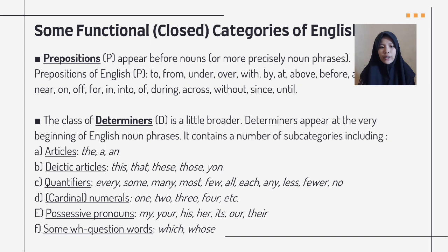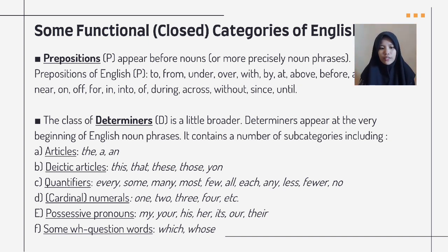The class of determiners (D) is a functional category. Determiners appear at the very beginning of English noun phrases and contain a number of subcategories, including: articles — 'the,' 'a,' 'an'; deictic articles — 'this,' 'that,' 'those'; quantifiers — 'every,' 'some,' 'many,' 'most,' 'few,' 'all,' 'each,' 'any,' 'less,' 'fewer,' 'no'; cardinal numerals — 'one,' 'two,' 'three,' 'four'; possessive pronouns — 'my,' 'your,' 'his,' 'her,' 'its,' 'our,' 'their'; and question words — 'which,' 'whose.'